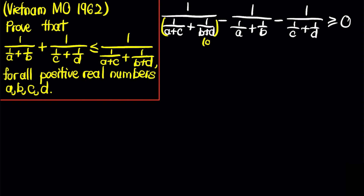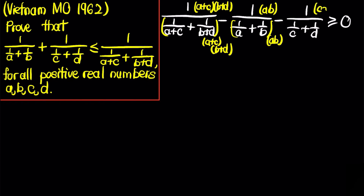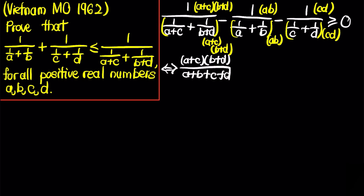For the first fraction, I'll multiply the top and bottom by (a+c)(b+d). For the second fraction, I'll multiply top and bottom by a·b, and for the third by c·d. Therefore, this inequality holds if and only if we can show that (a+c)(b+d)/(a+b+c+d) minus ab/(a+b) minus cd/(c+d) is greater than or equal to 0.